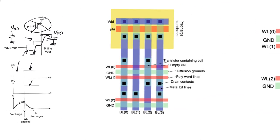With memories, we always want to examine the layout, because only the layout gives a good understanding of area and density. The NOR ROM layout shows the row of PMOS pre-charge transistors in a well at the top (single-well process), with bit lines running vertically in the metal layer.